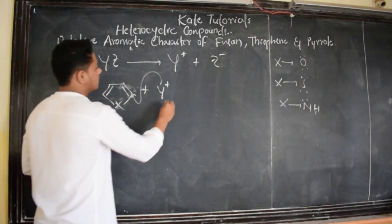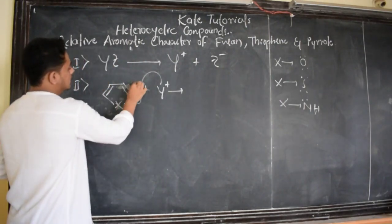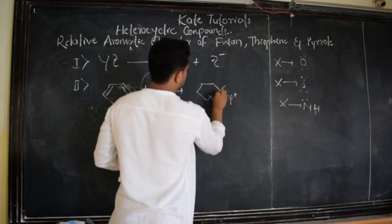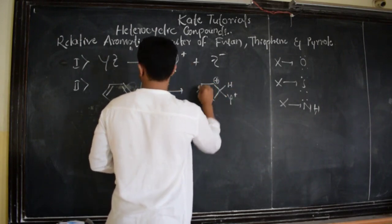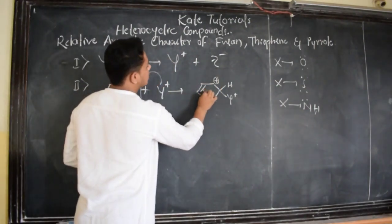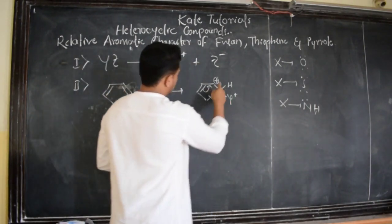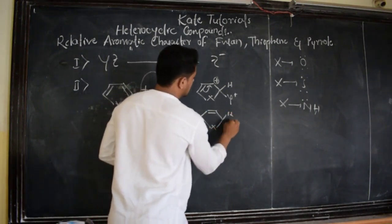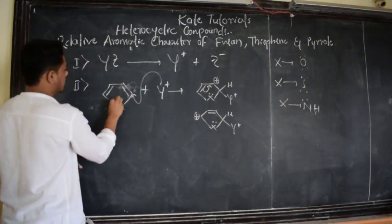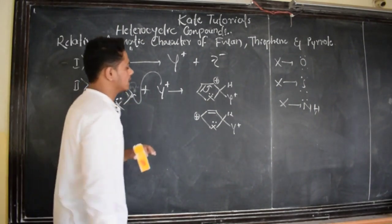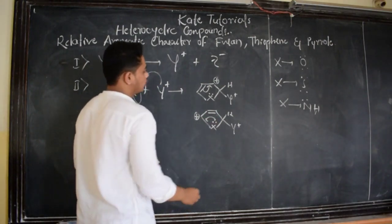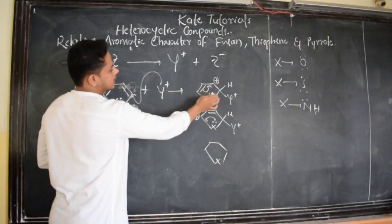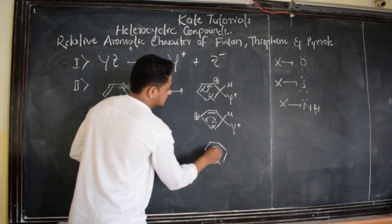Why does Y+ attack at the second position? I will explain. It attacks the second position, so the heteroatom X gets a negative charge and the ring carbon gets a positive charge. The positive charge is stabilized by delocalization of electrons, giving a delocalized double bond. The positive charge can be at two positions, and this X has the lone pair electrons which are involved in aromaticity — because of which it is also an aromatic intermediate. We get three resonance structures when the electrophile attacks at the second position.